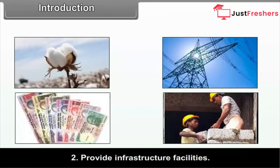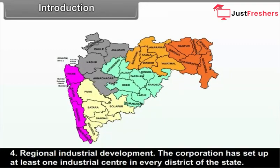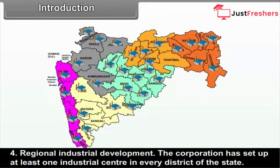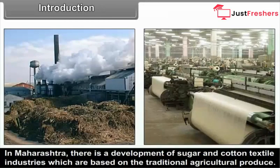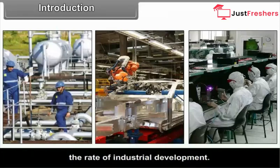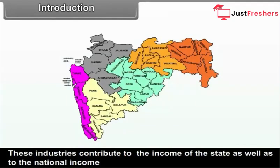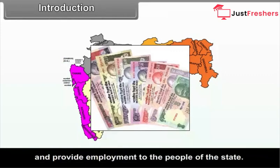MIDC was established to provide infrastructural facilities, promotion of industries in underdeveloped regions and regional industrial development. The corporation has set up at least one industrial centre in every district of the state to achieve regional balance. In Maharashtra, there is development of sugar and cotton textile industries based on traditional agricultural produce, as well as chemical, automobile and electronic industries, which contribute to state and national income and provide employment.